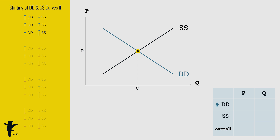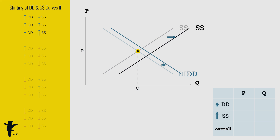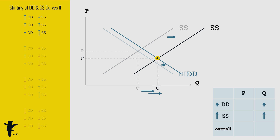When demand increases a little, demand shifts to the right just a little. When the increase in supply is huge, supply shifts way to the right. Overall, quantity increases. Overall, price decreases. A small increase in demand causes a small increase in price. A huge increase in supply results in a huge decrease in price. Add up these opposing effects — a small drop in price.